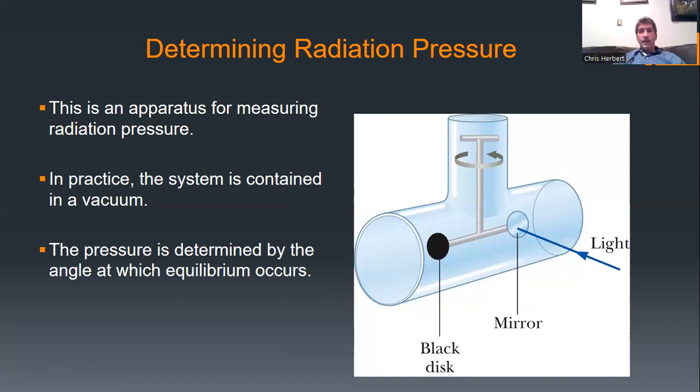So we actually double the amount of momentum transfer. In determining radiation pressure, if it's an absorptive body, we have a certain amount of pressure produced. If it's a reflective body, we get twice as much momentum transfer because essentially it's an inelastic collision versus an elastic collision.